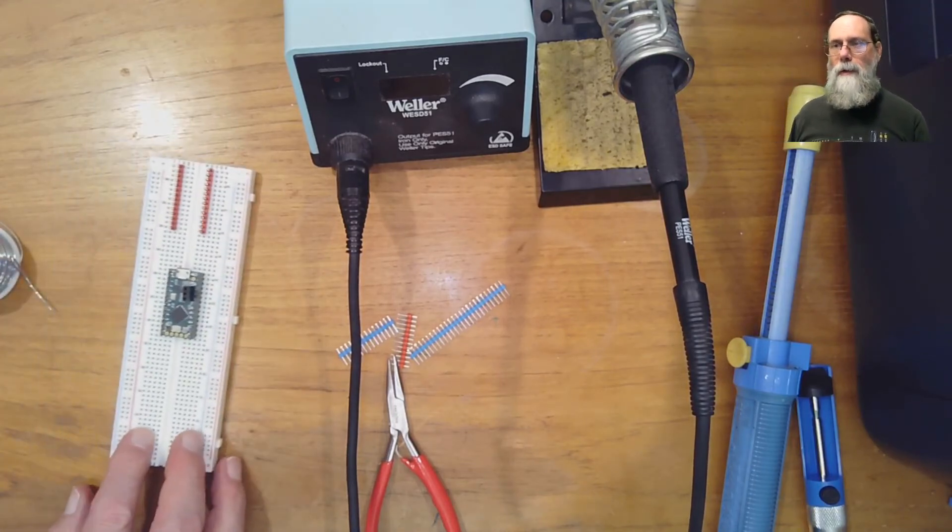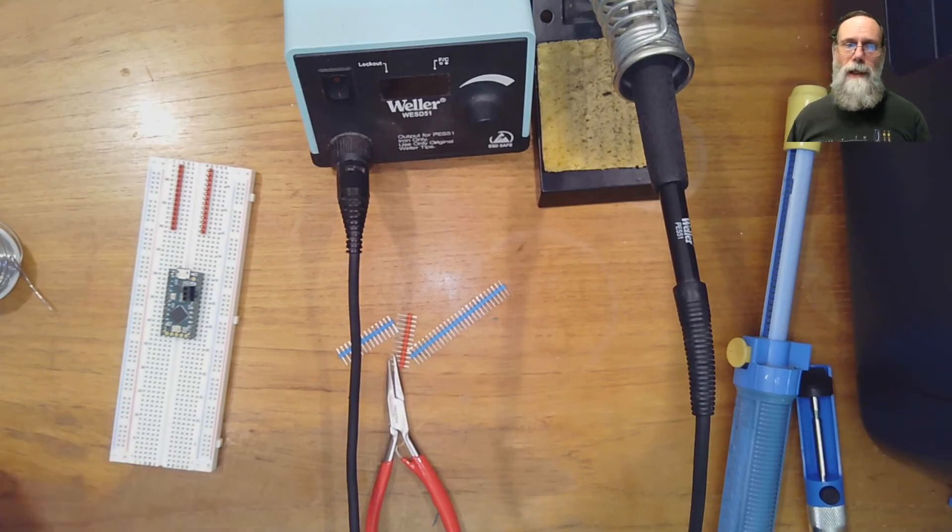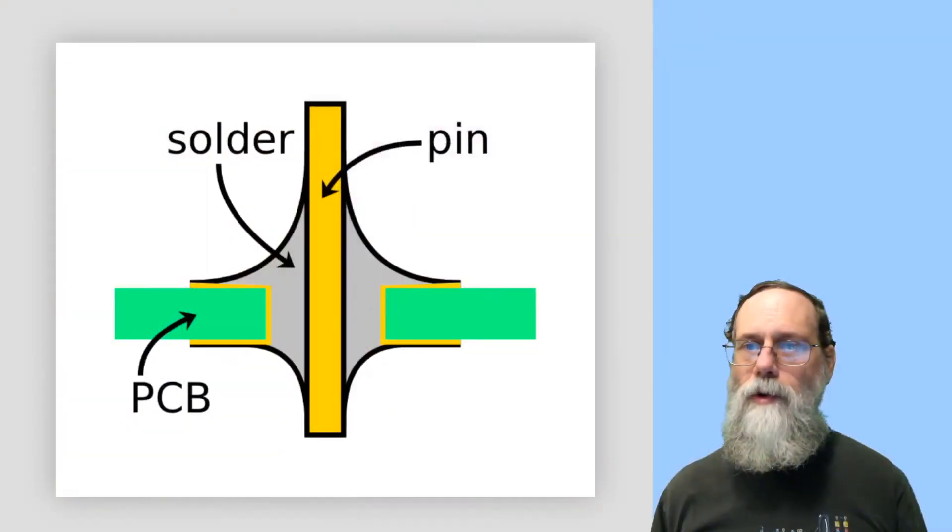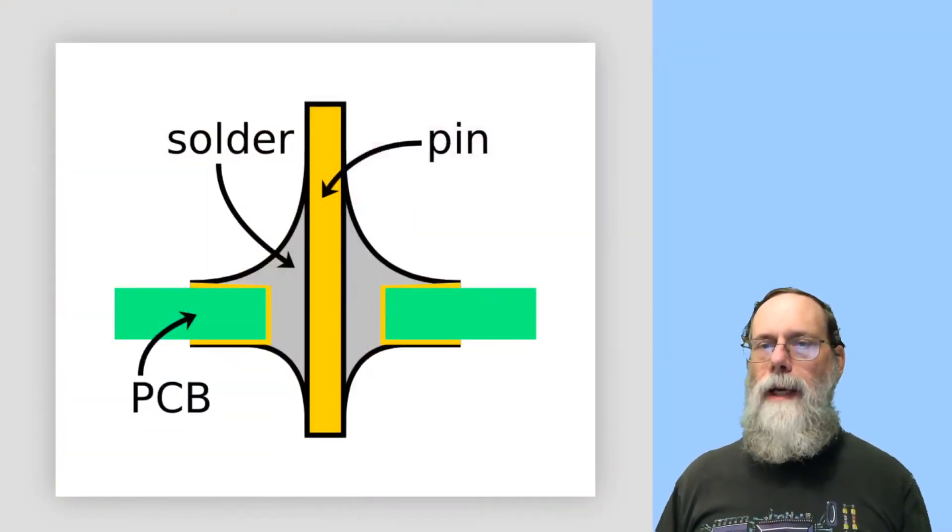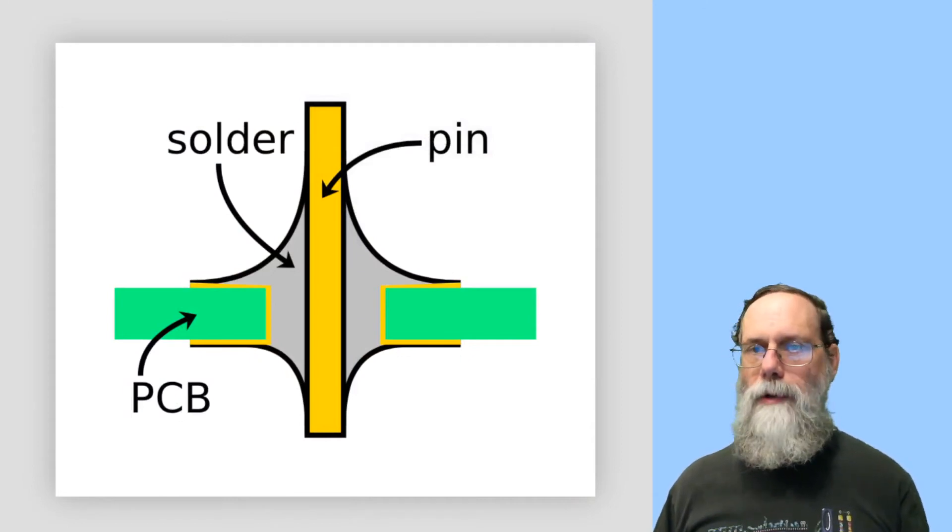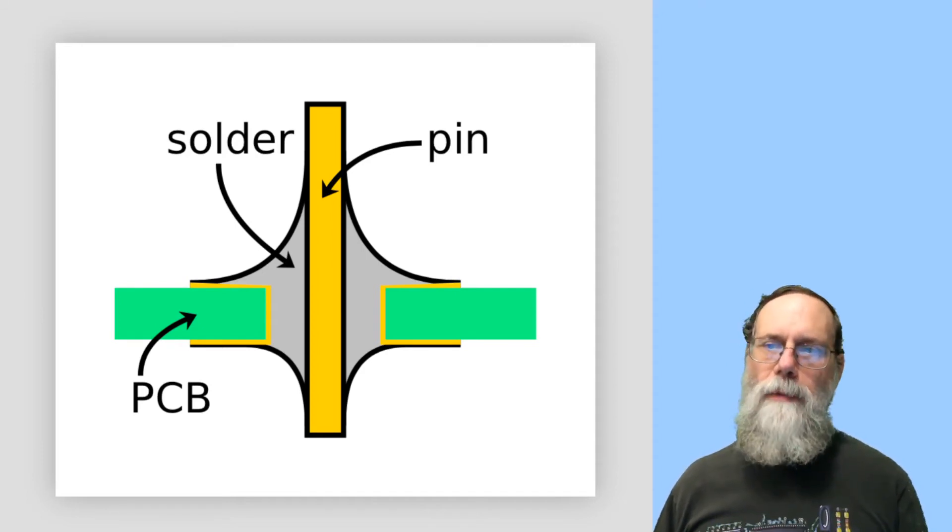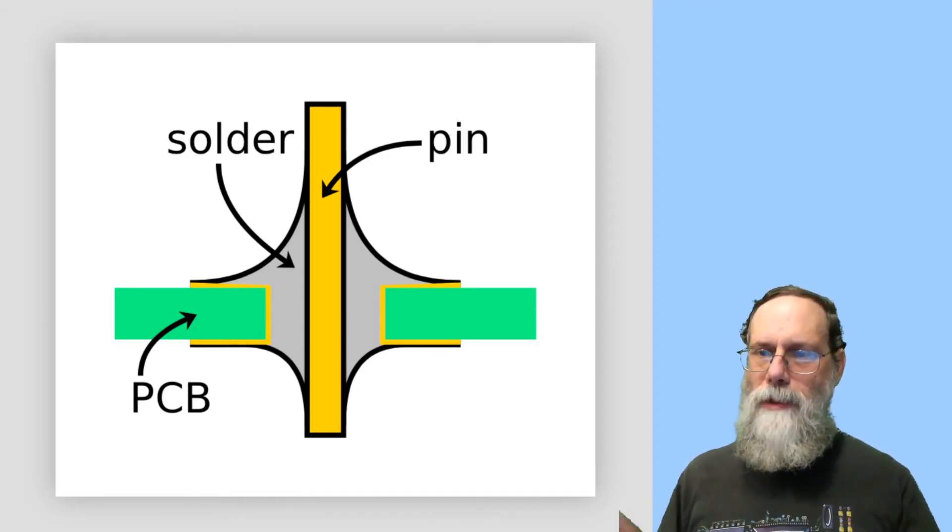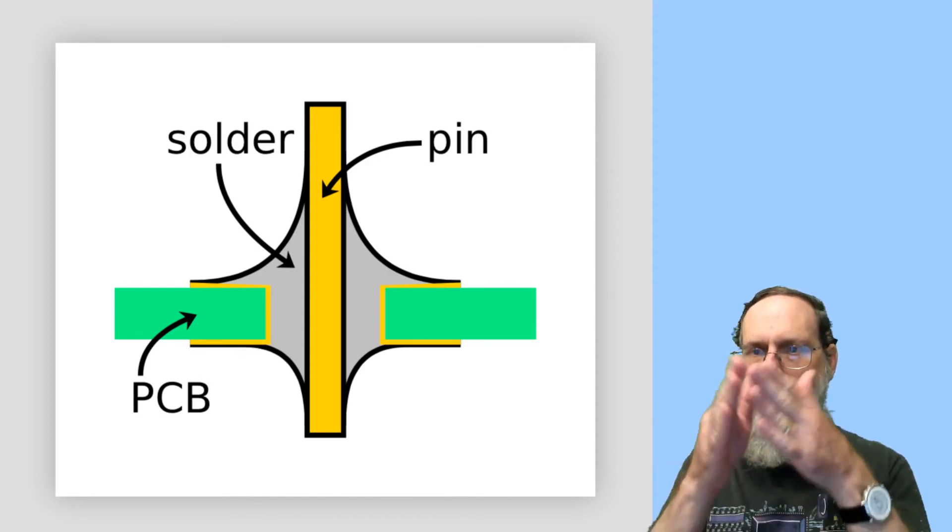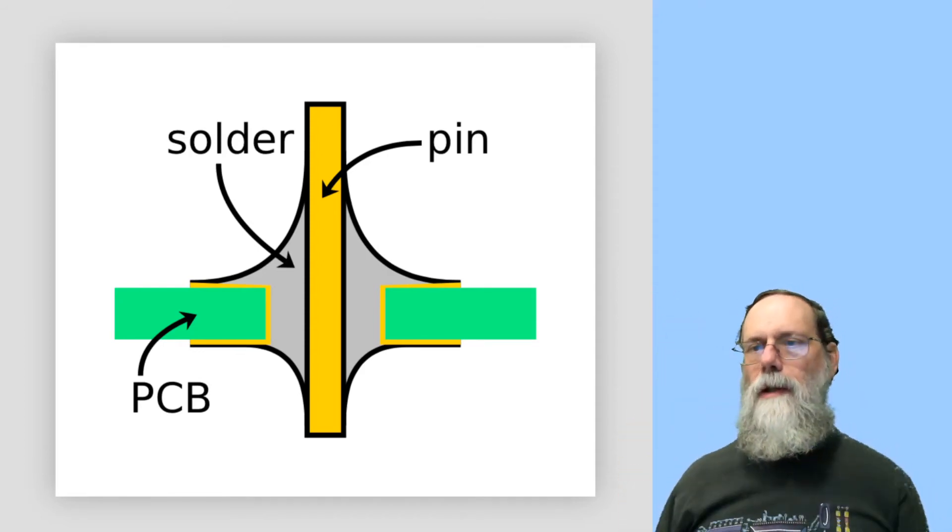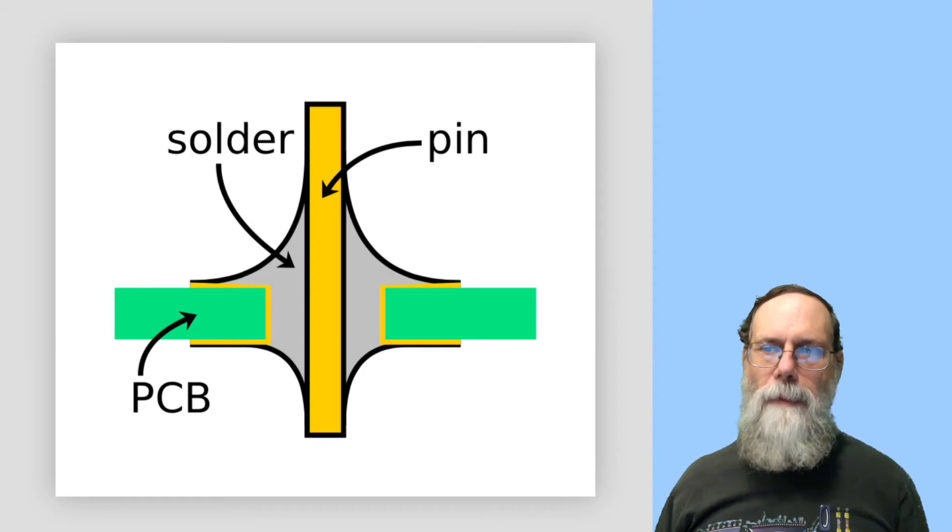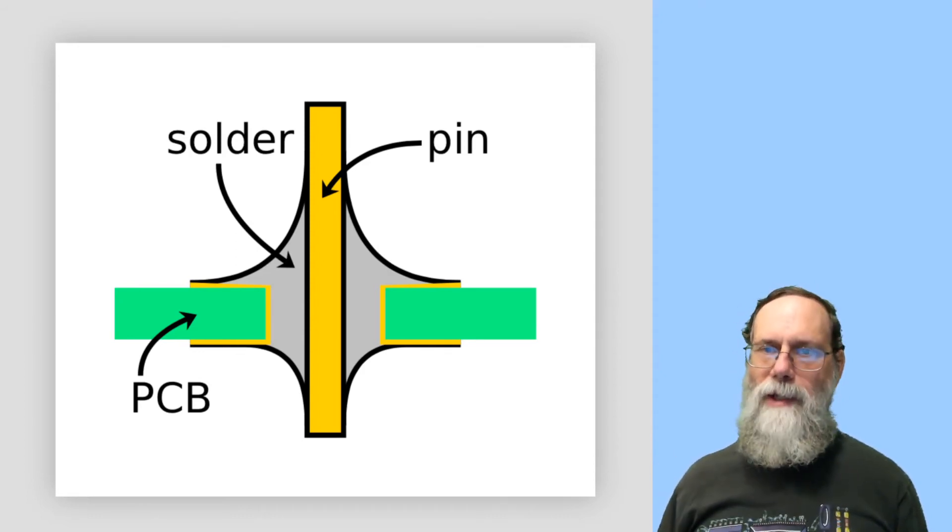There are pictures in the book of what good and bad solder joints look like. Let's actually take a look at a sort of a cross section so we can see what it is we're trying to achieve here. The idea is that the pin or the wire that's going through the hole should be mechanically firmly connected to the board. There should be a solid block of solder there. And the solder should be wetting both the PC board pad and the pin so that you get this meniscus shape. And you can detect bad solder joints by deviations from that shape.